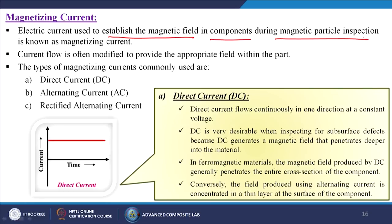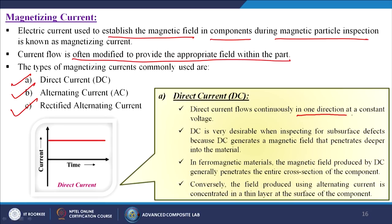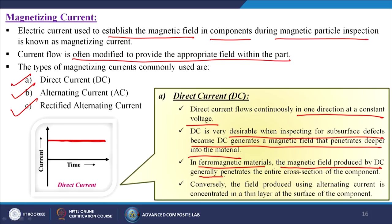Magnetizing current — the electric current used to establish the magnetic field in components during magnetic particle inspection — is known as the magnetizing current. There are three types of current generally used: direct current (DC), alternating current (AC), and rectified alternating current. Direct current flows continuously in one direction at a constant voltage — it is totally constant and does not change. DC is very desirable when inspecting for subsurface defects because it generates a magnetic field that penetrates deeper into the material. In ferromagnetic materials, the magnetic field produced by DC generally penetrates the entire cross section of the component.